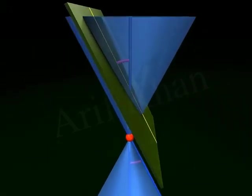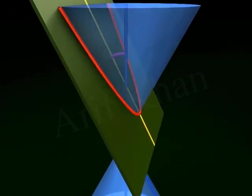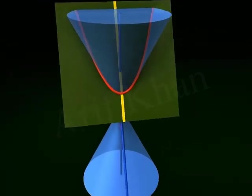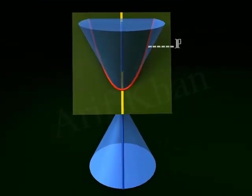Parabola. When the angle made by the plane to the vertical axis is exactly equal to the vertex angle, we get an open curve called a parabola at the intersecting surface of the cone.